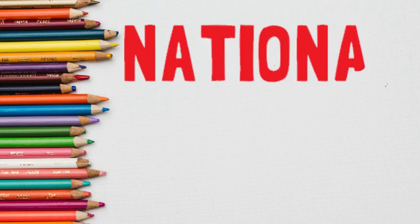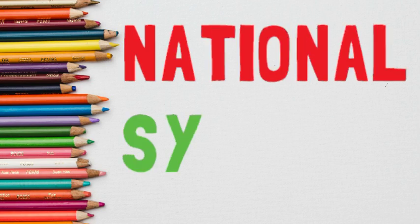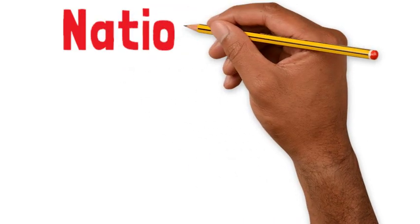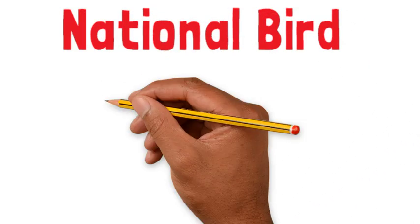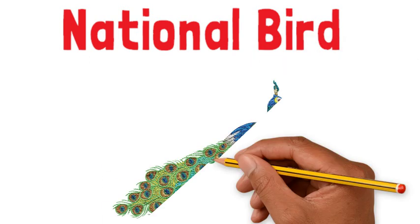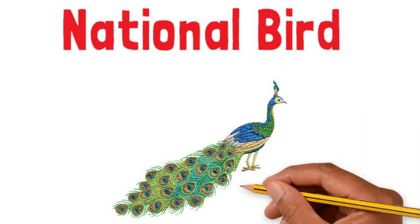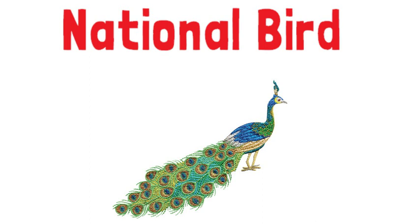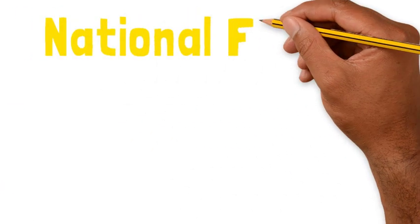Hello friends, let's learn about national symbols today. First of all, we have national bird — it is peacock. Peacock has blue, golden, and green feathers.